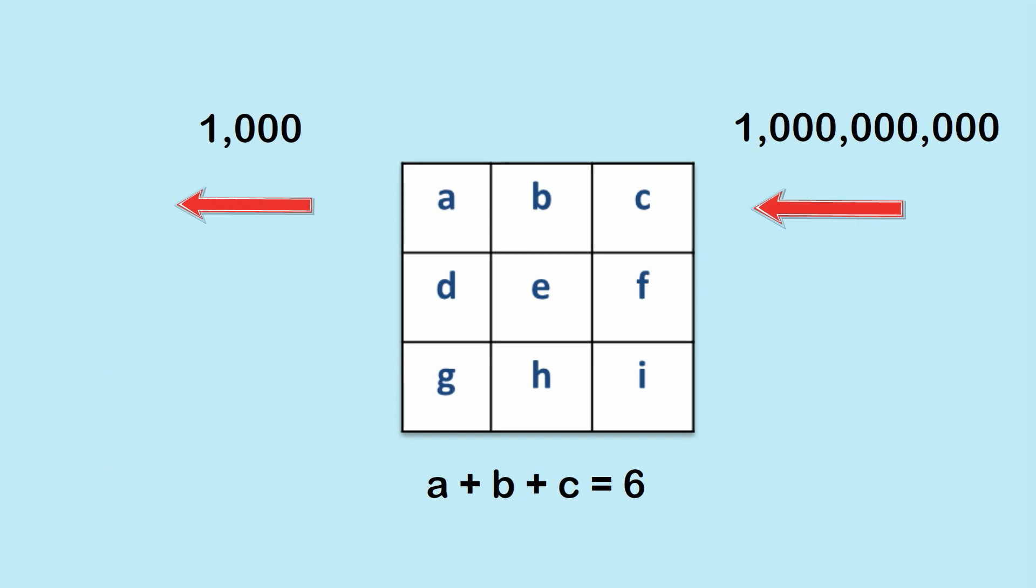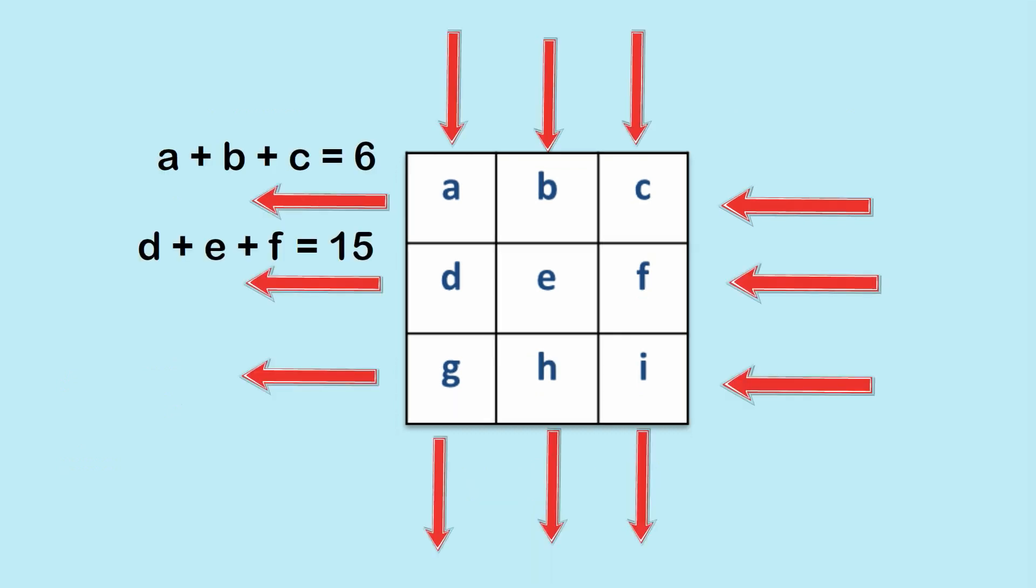Now, the fundamental problem, of course, is that there's still an infinite number, essentially, of solutions to this problem. We could have 1 plus 1 plus 4 equals 6, or 2 plus 2 plus 2 equals 6. And the way that we solve to find out what a to i is, is that we need more x-rays. So, now let's imagine that we shine in 3 x-rays, horizontally and 3 vertically.